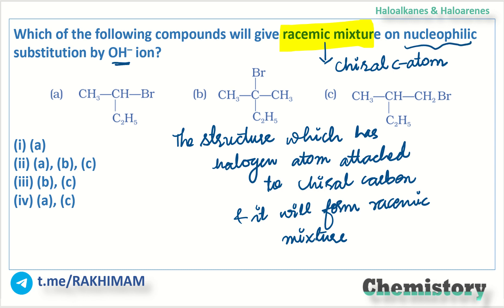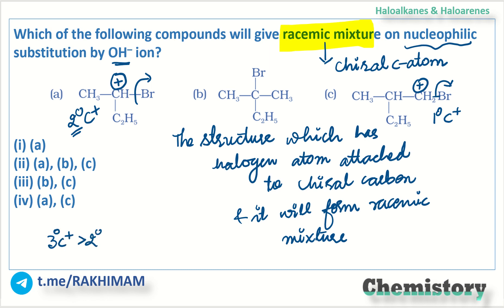Also, I want to point out that if the bromide ion leaves here and a carbocation forms, that would be a 2° carbocation. And if we look at option C, the carbocation formed there would be a 1° carbocation. In SN1, the reactivity order is: 3° carbocation > 2° carbocation > 1° carbocation.